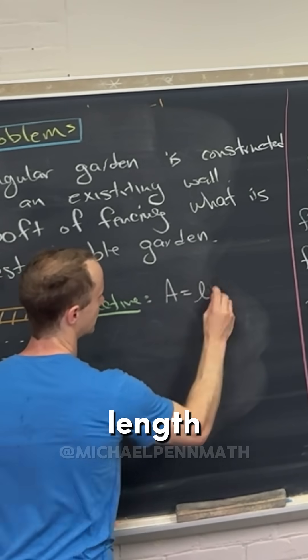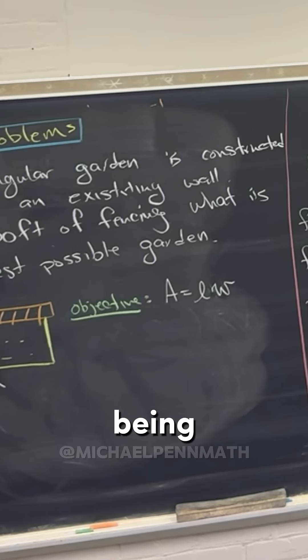Which is length times width. That being said, that's a two-variable equation. We're in single variable calculus; multi-variable calculus is Calculus 3. So we need some way to reduce this to a single variable equation instead of a two-variable equation.